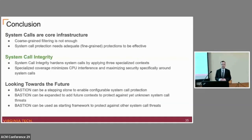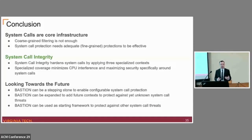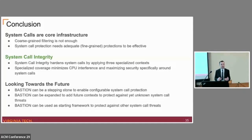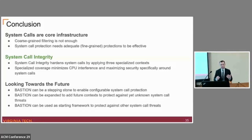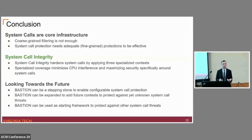In conclusion, system calls are core infrastructure that we really need to care about and protect adequately. I've introduced the concept of system call integrity, which hardens system calls by applying three specialized contexts. Looking towards the future, the Bastion prototype is a great stepping stone to enable configurable system call protection — it can be extended to add new contexts as research develops further in this direction or as new attacks targeting system calls evolve. Thank you for your attention; I look forward to your questions.